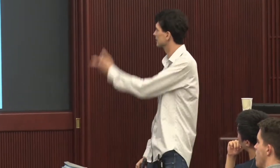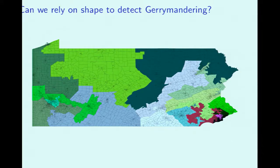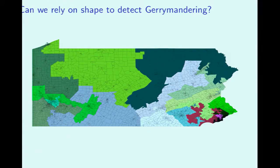What about using the shapes of districts as evidence? The Goofy Kicking Donald Duck district seems like obvious evidence something's wrong — and to some extent, crazy district lines do suggest somebody was trying hard to accomplish something. But it doesn't tell you what they were trying to accomplish or whether Democrats or Republicans did it. It's not quantitative. And crucially, it can miss gerrymandering by a lot.